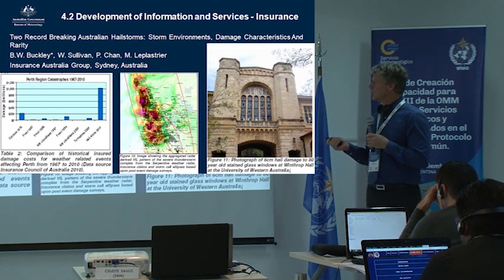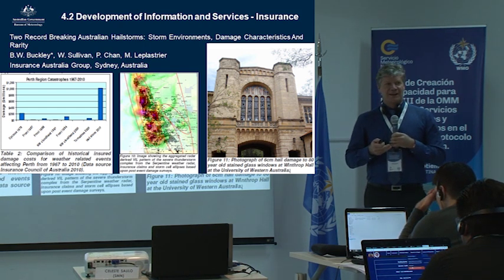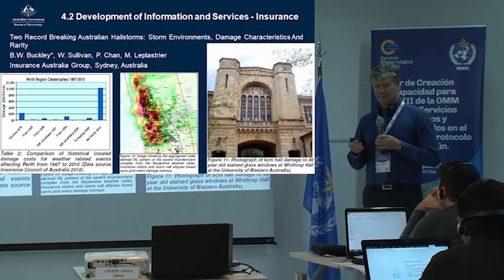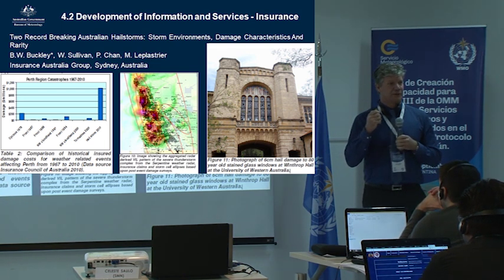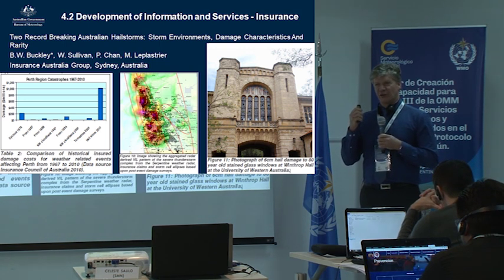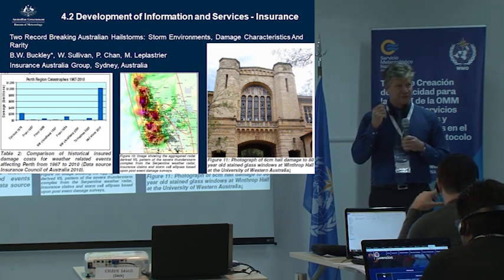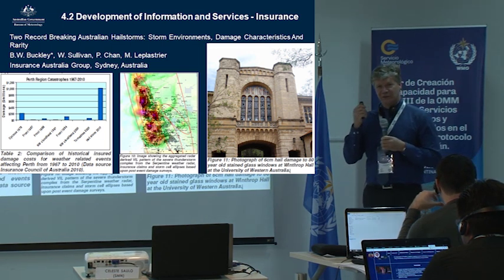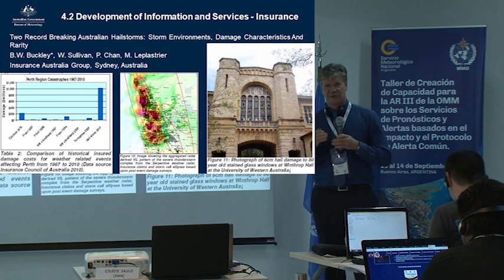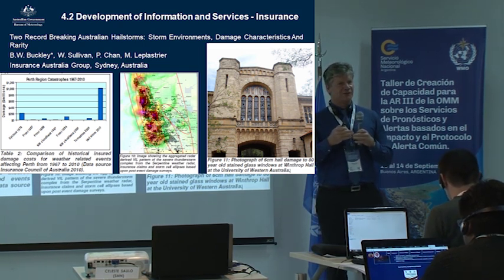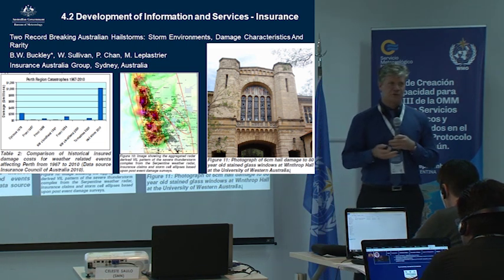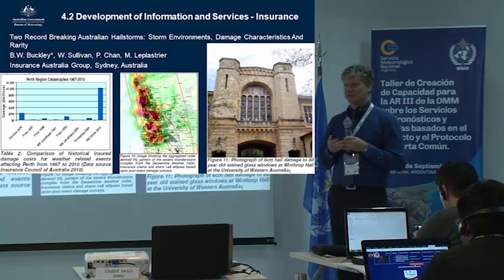We don't know for sure, but Bruce says what tends to happen is during an event people ring their insurance company first when something goes wrong, and then generally get told if they really need assistance to ring the SES. So there's potentially 10 times more impact data coming into the insurance industry in real time during an event than what there is to the emergency services.